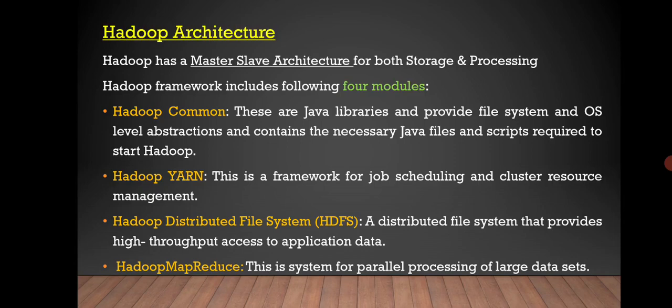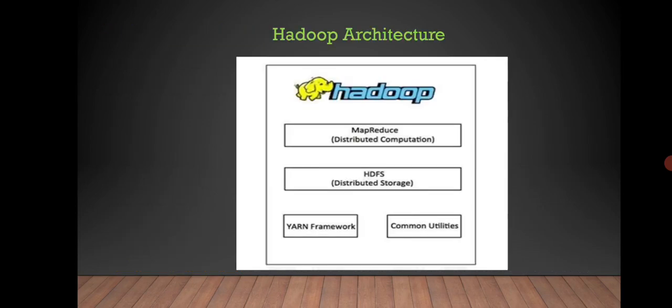Hadoop YARN is a framework for job scheduling and cluster resource management. Hadoop Distributed File System is a distributed file system that provides high-throughput access to application data. Hadoop MapReduce is a system for parallel processing of large datasets.